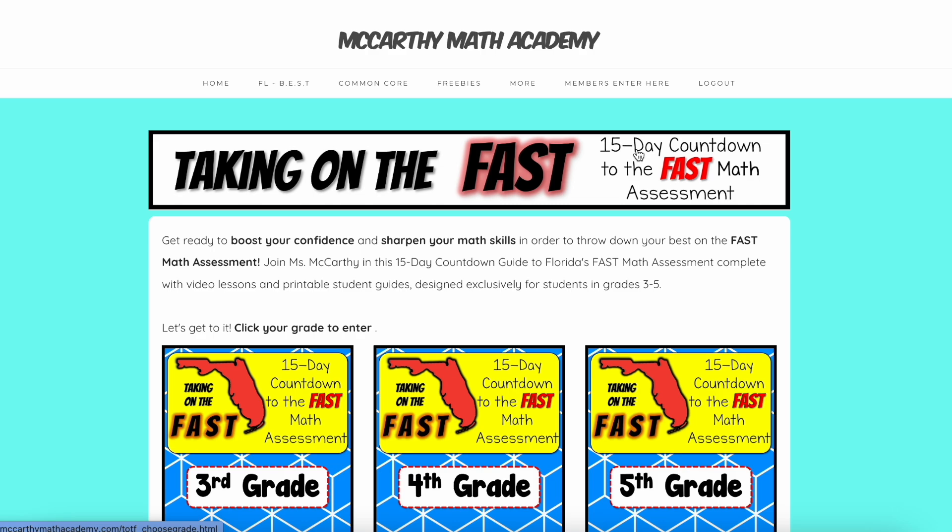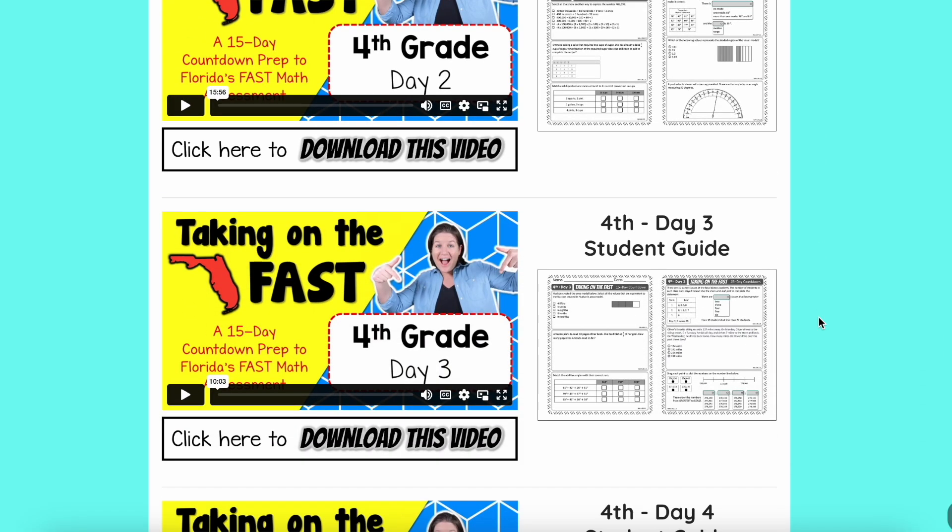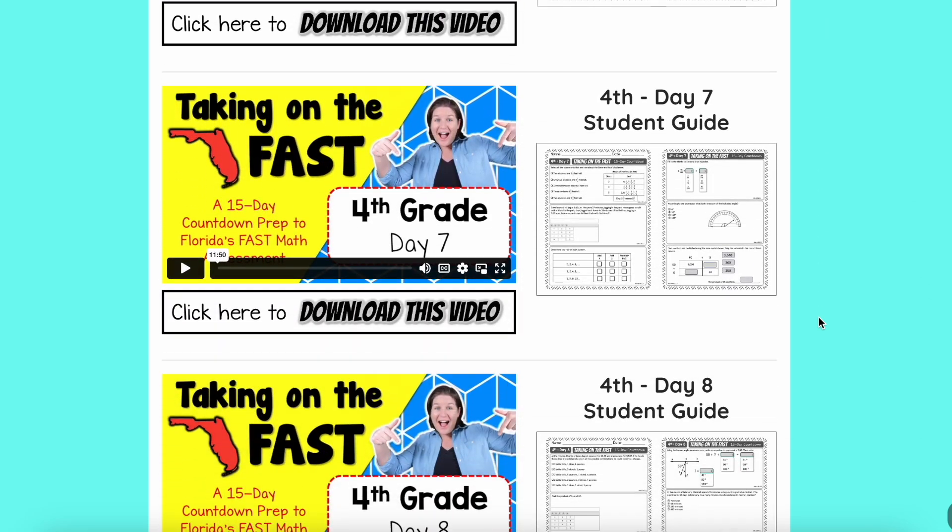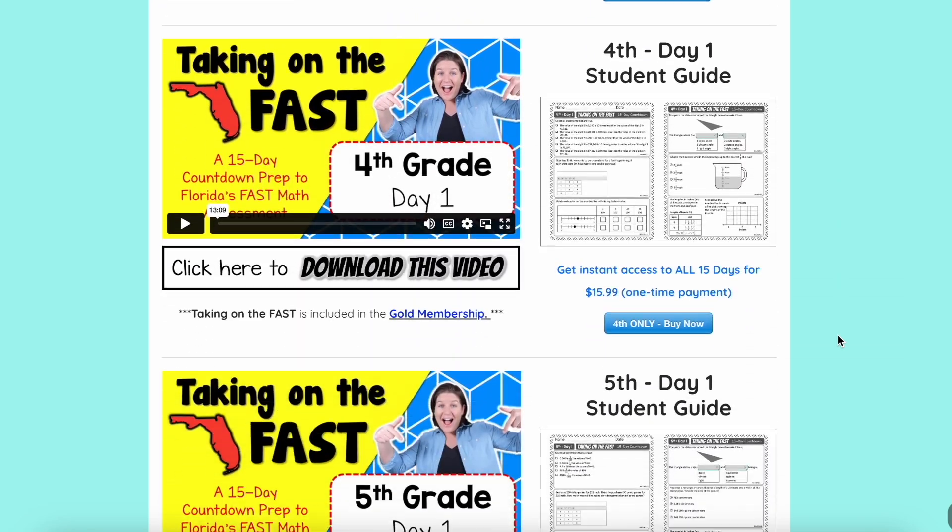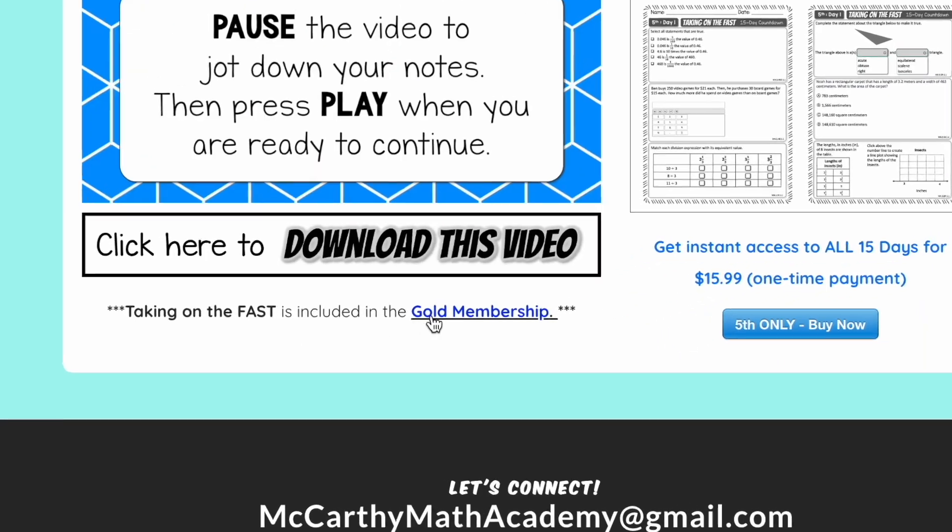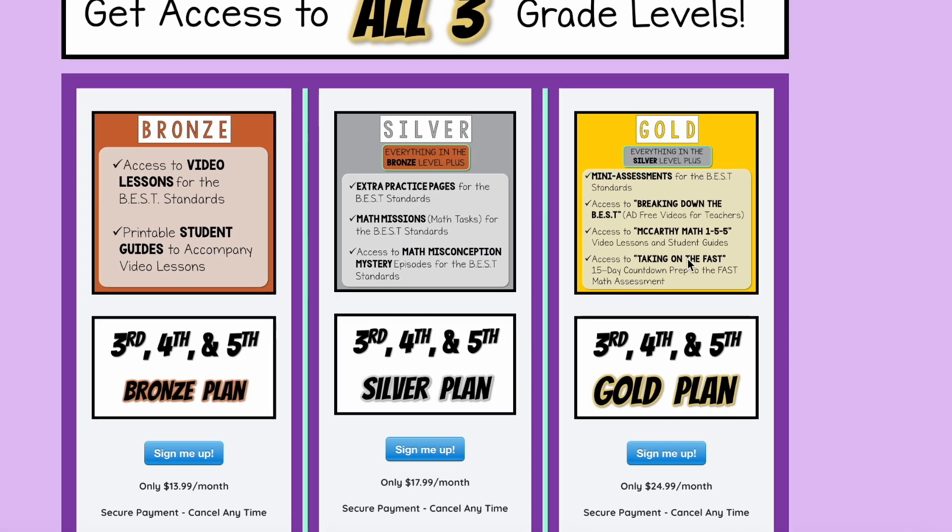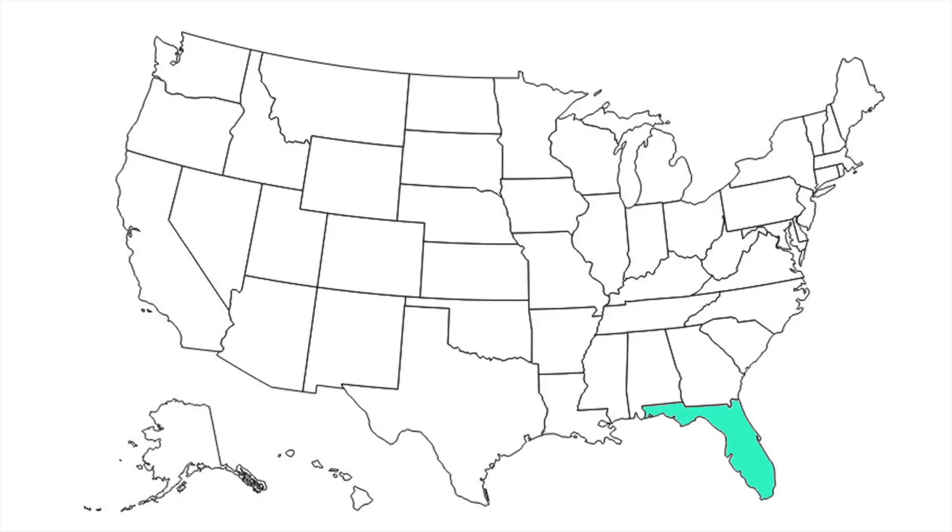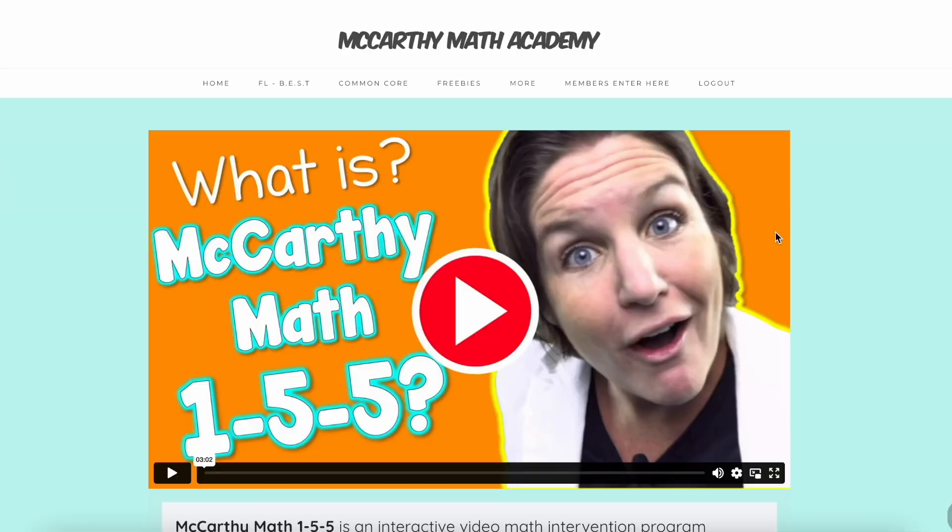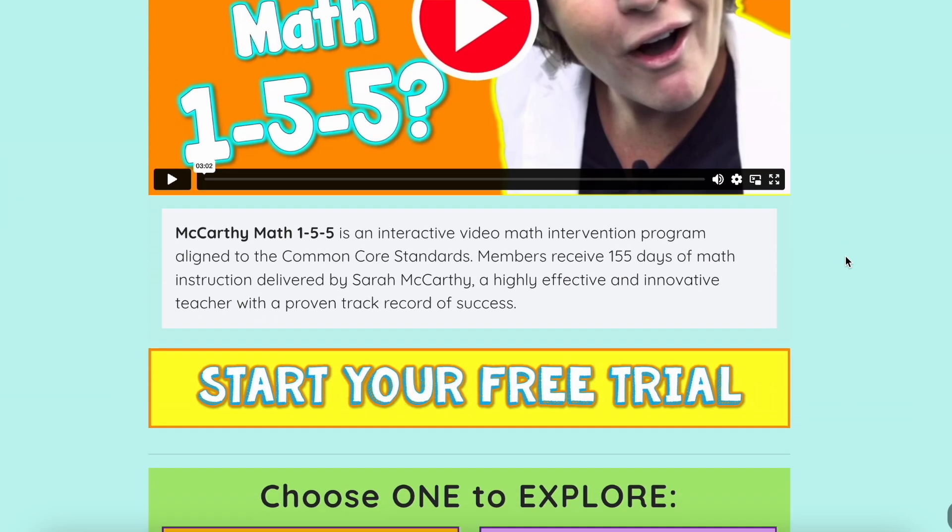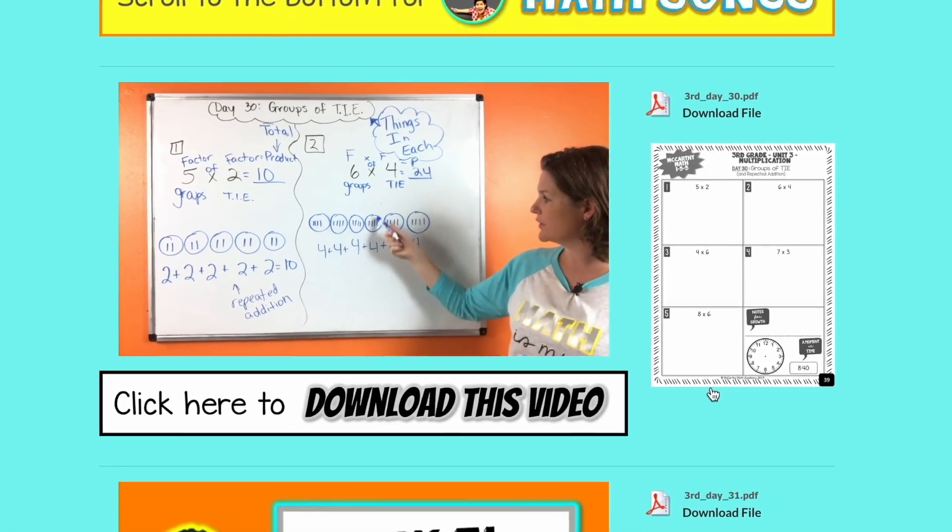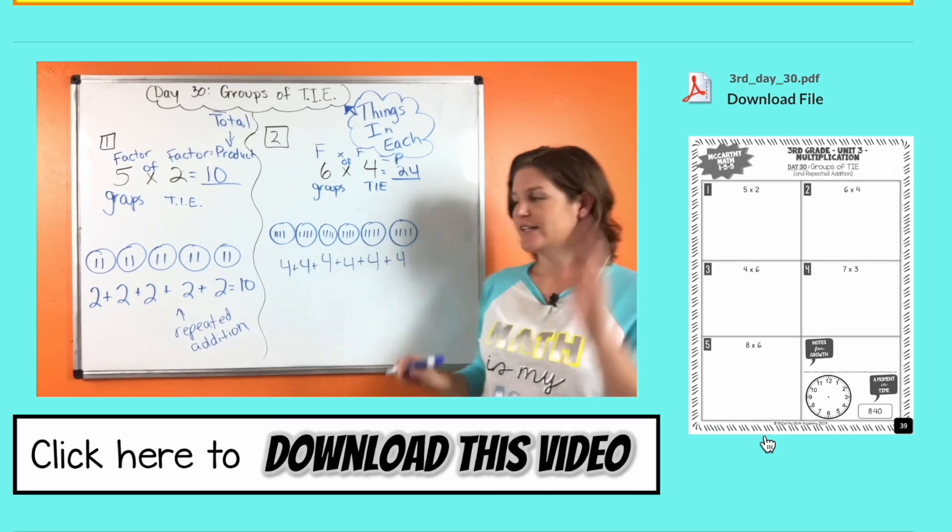And if you're gearing up for the final fast math assessment of the school year, definitely check out Taking on the Fast, a 15-day countdown series with video lessons and fast style math problems. Start with a sneak peek of day one, and when you're ready, you can make a one-time purchase. And if you're thinking about the gold plan for Taking on the Best, good news! Taking on the Fast is included in your membership. While many of my followers are in Florida, I know that there are teachers and parents everywhere looking for support. That's why I created McCarthy Math 155 with 155 video lessons for each grade level, third, fourth, and fifth. You can also sign up for a free trial to McCarthy Math 155 to explore it before signing up for a monthly membership.